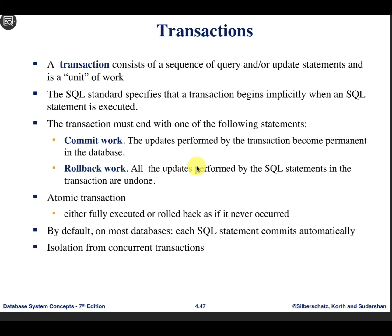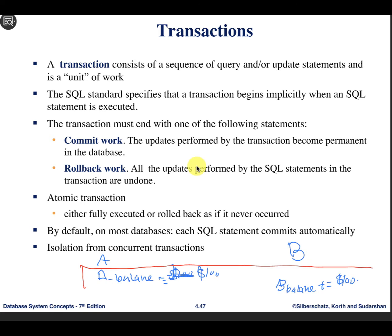For example, you need to transfer money from account A to account B. You access account A's balance, then subtract $100. After that, the second operation: you access account B and add $100. That's the transaction — both operations must be executed as one unit. Either they execute together as one unit or not at all.